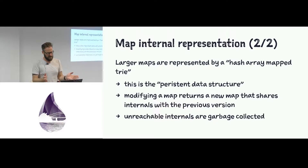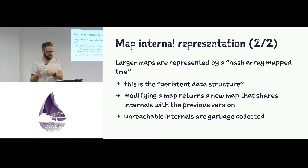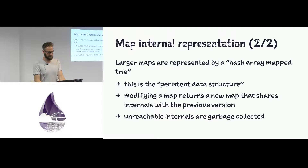Maps are the most complicated persistent structure. Structs are just maps with a key called struct that contains the atom reference to the module. Tuples are basically arrays. Maps are the bread-and-butter of complicated data structures in BEAM and have an amazing underlying structure for efficiency.